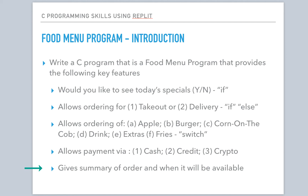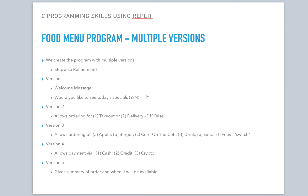I think you'll really enjoy this program. We're going to break it up into multiple versions, and each version will add new functionality to it. The first version will have a welcome message and ask if you want to see the specials. The second version will ask do you want to do takeout or delivery. The third version will add the functionality where you can actually order the items you'd like. Version four will add the payment processing, and then version five will give the summary and when your order will be available.